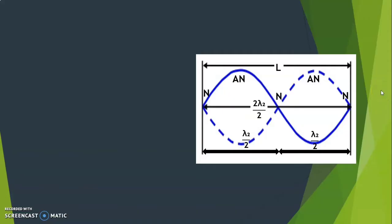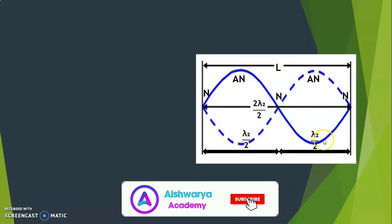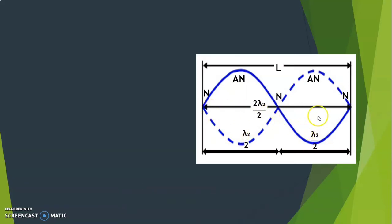In the previous case, we had one single segment but here we are having two segments. The distance of one segment is lambda 2 by 2 and another segment is also lambda 2 by 2. Therefore, the total distance between two segments will be 2 lambda 2 by 2.